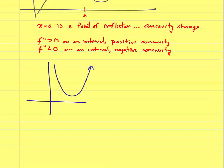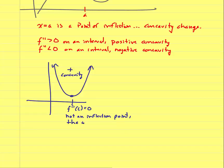Consider a graph that always has positive concavity. Someone might look at the turning point and think something important is happening, but that's not an inflection point because there's no concavity change. Even if the second derivative equals zero at point C, it's not an inflection point because the concavity doesn't change. It may be a critical number to test in a concavity chart, but without a concavity change it is not a point of inflection.